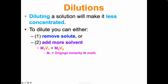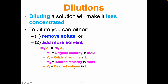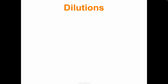M1 is your original molarity in moles per liter. V1 is your original volume, which needs to be in liters. M2 is your new desired molarity in moles per liter. V2 is your desired volume, again in liters. To do a dilution you'll have three of these values and you'll be solving for the fourth one. That's it - I promise it's not crazy.